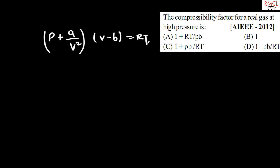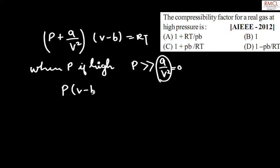When pressure is high, p is much greater than a/v², so this value is considered to be approximately zero. So p(v - b) = RT. Therefore, pv - pb = RT.